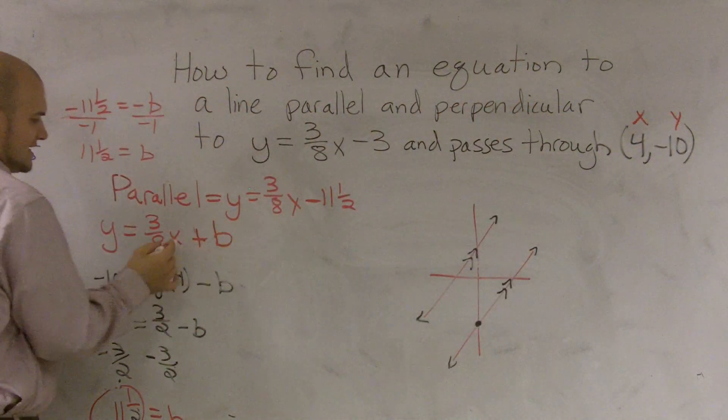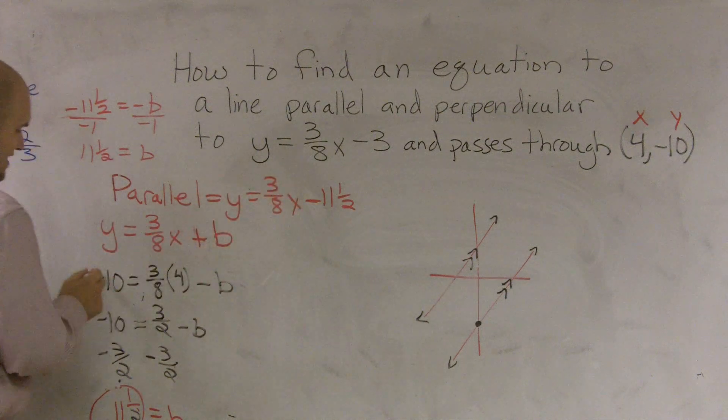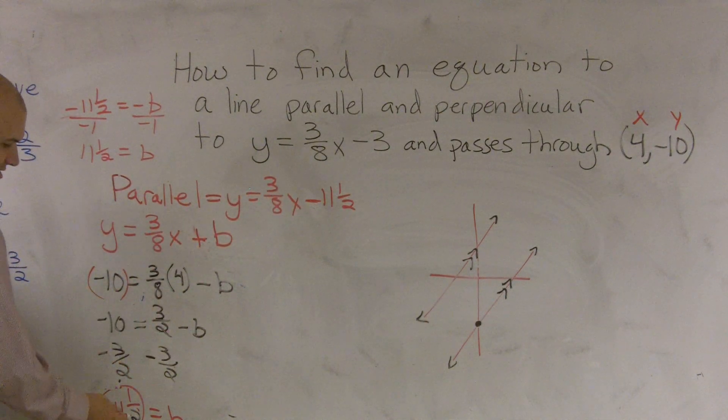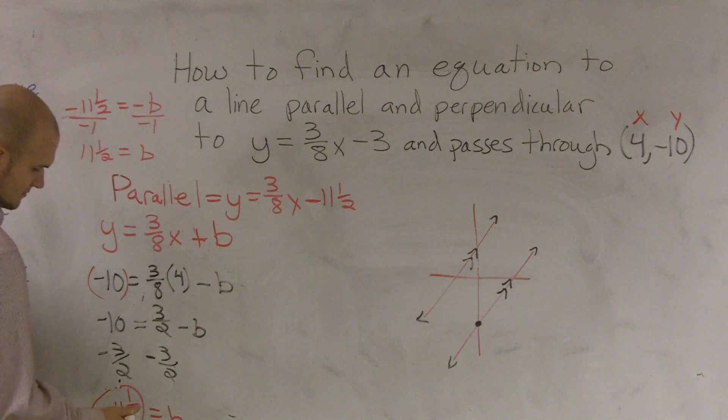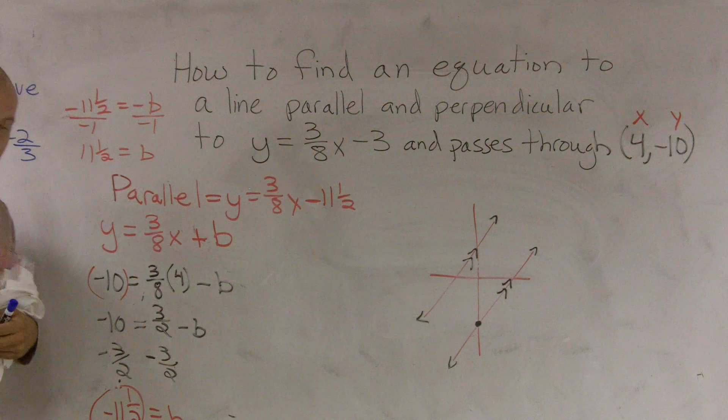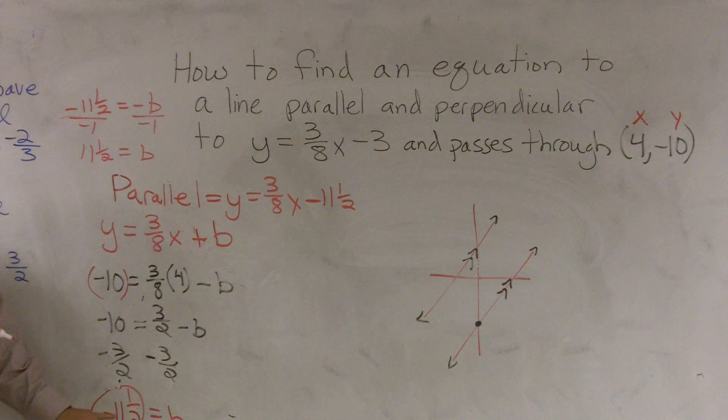And when I do that and solve, I get negative 11 halves equals b. Then, all I do is, so now that's my new y-intercept.